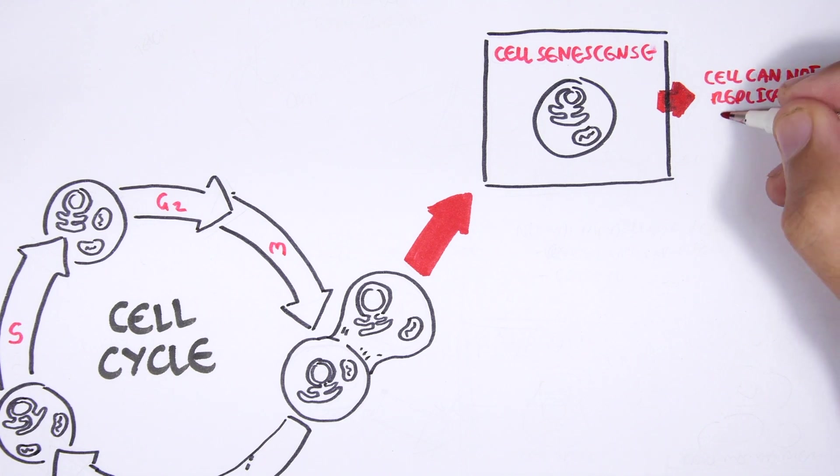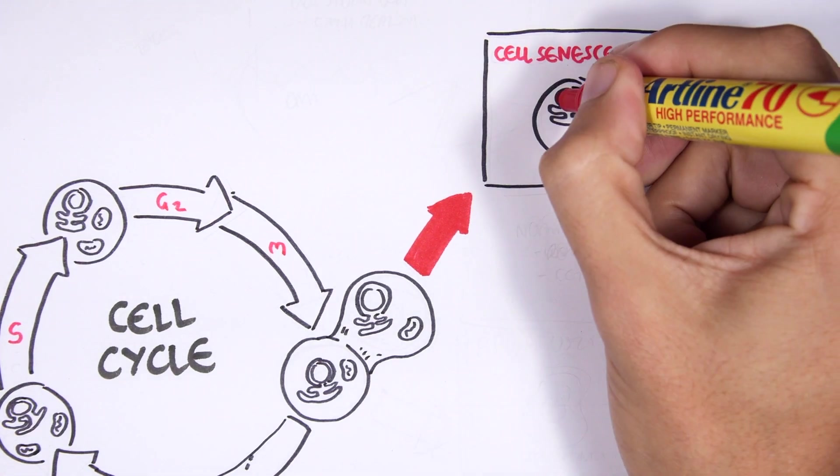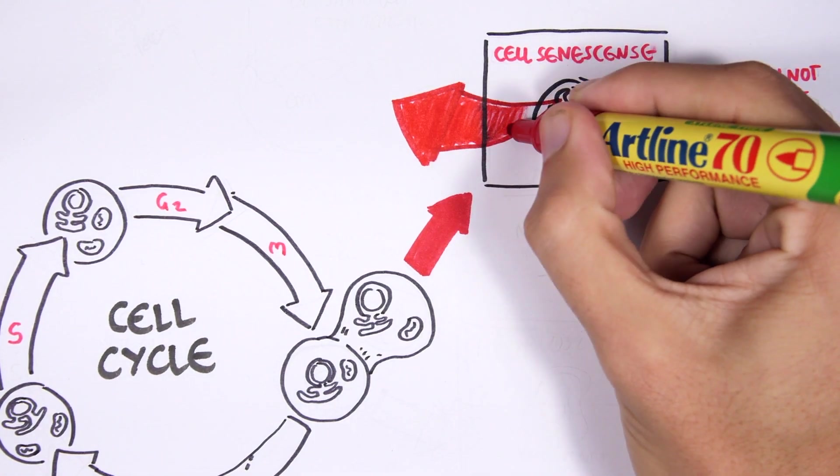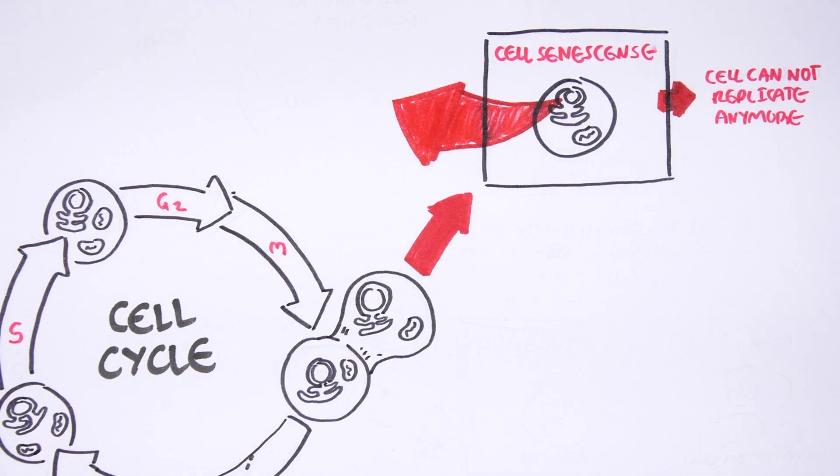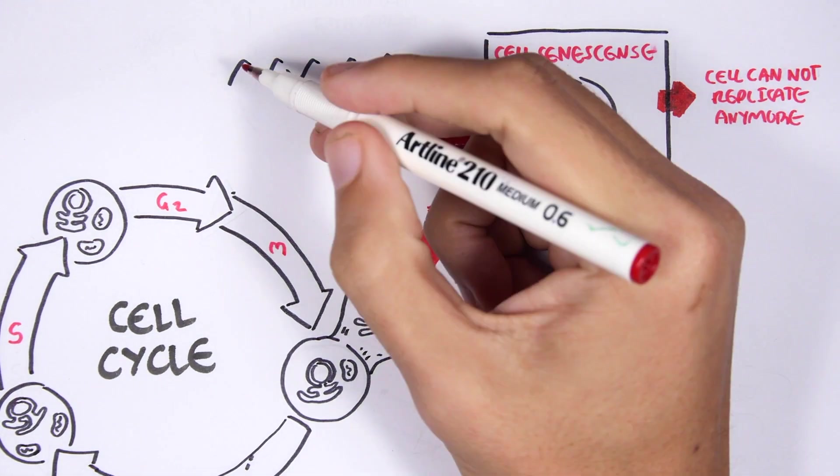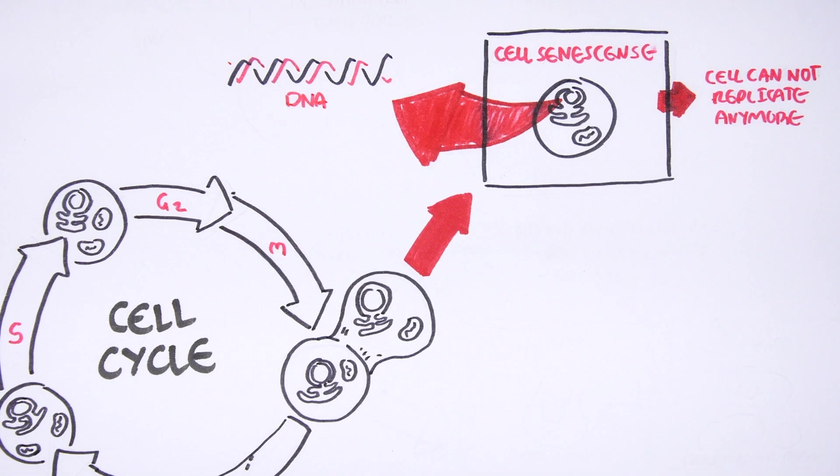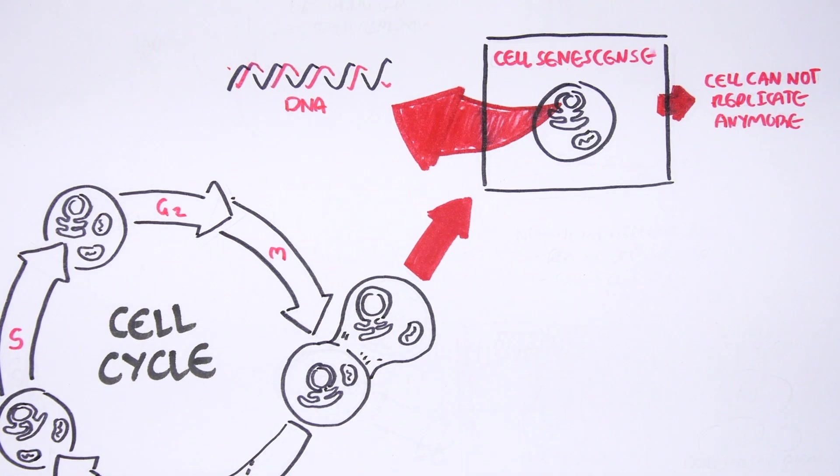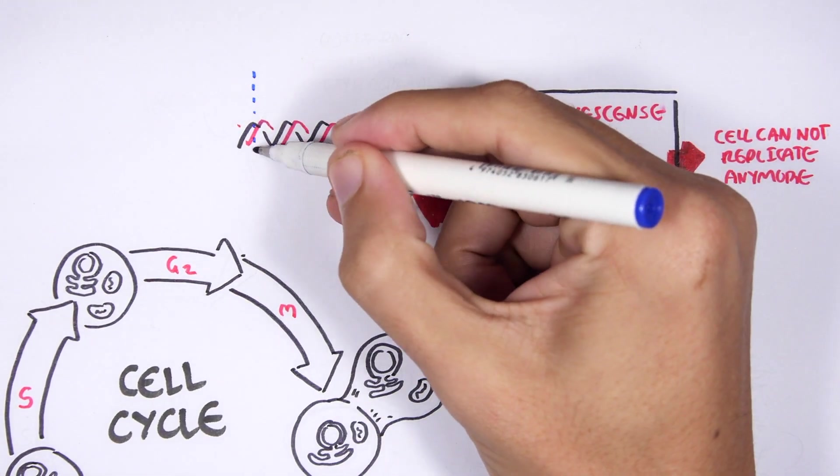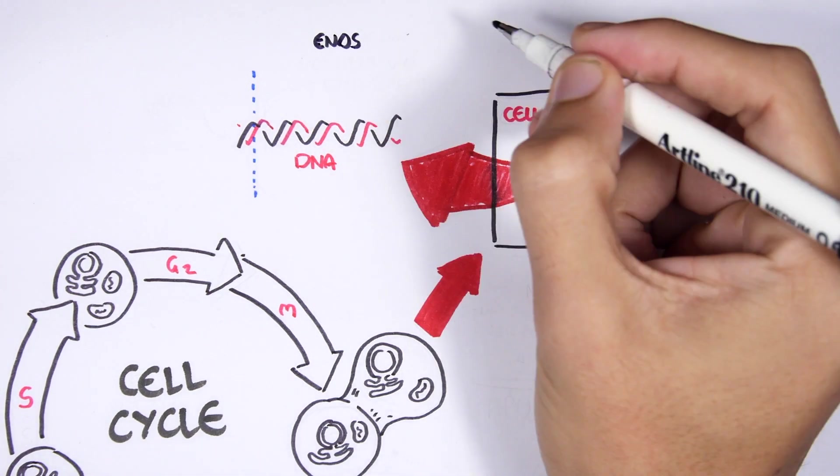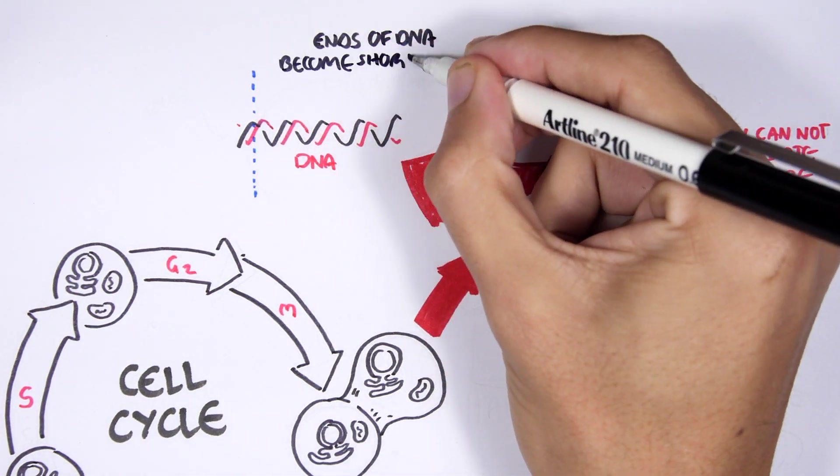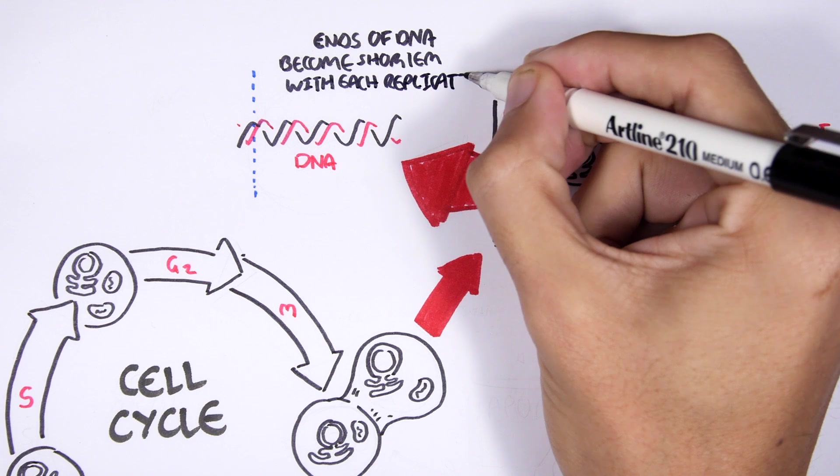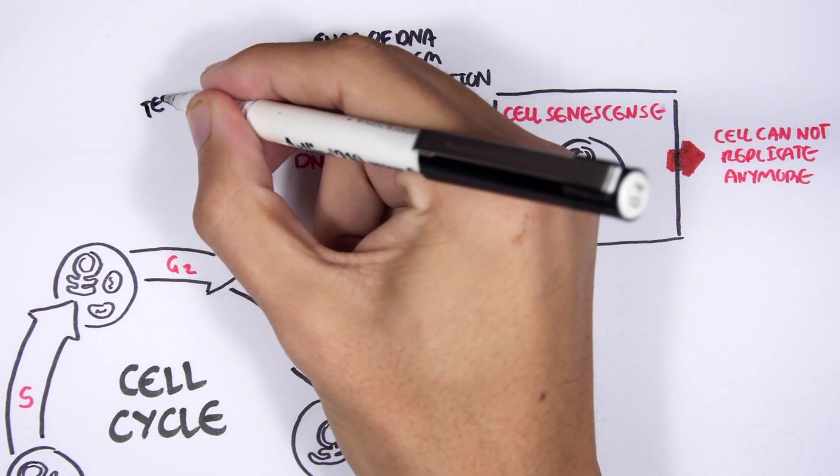One reason for this is that its DNA becomes shorter with each replication. So if this was the cell's DNA, if this was the end of the cell's DNA, the end of the DNA actually becomes shorter with each replication. The ends of the DNA are known as telomeres.